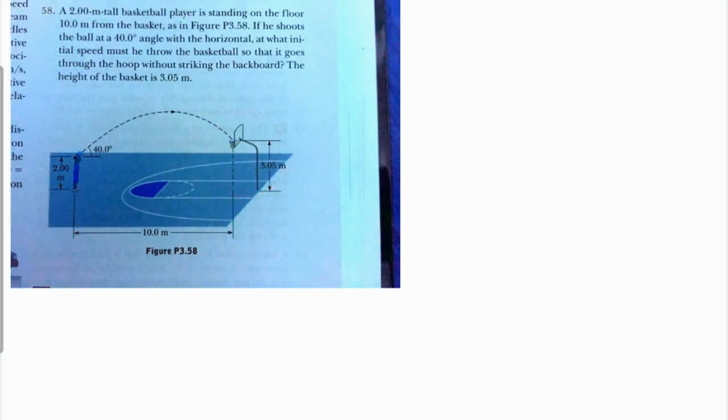A 2-meter tall basketball player is standing on the floor 10 meters from the basket. The height of the basketball player is 2 meters, and where he has to basket is 3.05 meters from the distance from his legs. He throws the basketball at an angle of 40 degrees.